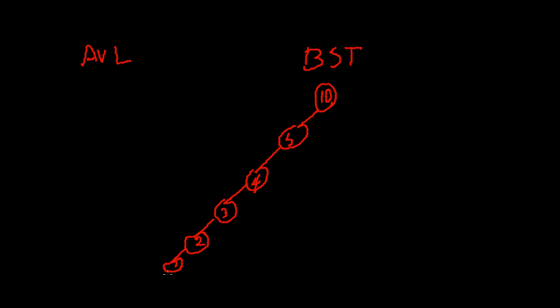If we want to remove 1, we're going to go again over n elements till we find 1. If we want to add 0, we have to go over n elements. So everything here is going to be O(n). That's not really time efficient for a BST. But the solution is to use AVL trees.